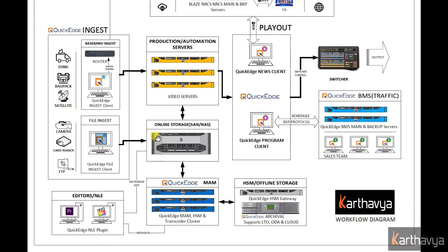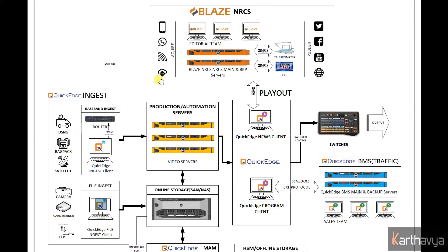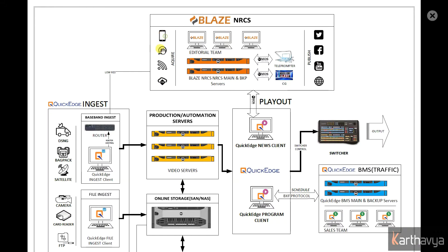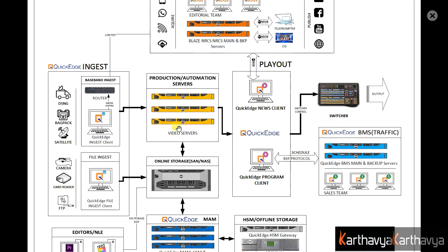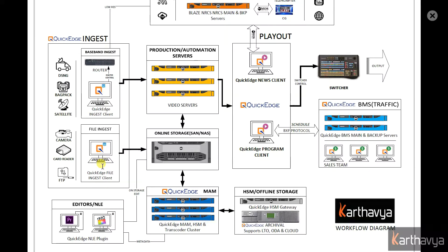Other forms of ingests like RSS, wires and mobile are handled by the Blaze Newsroom computer system. Once any content is ingested, the ingested media can be accessed through QuickEdge Asset Management application.